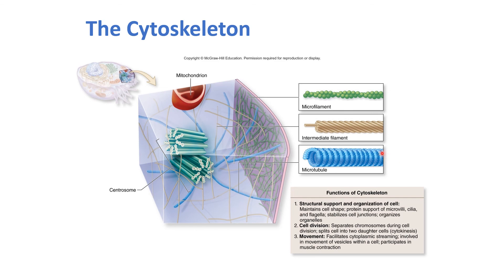Microtubules also form cilia, which help propel particles, and flagella, which help with movement. Microtubules also form microvilli, which increase the surface area of a cell so it can absorb more particles. For example, microvilli line the small intestine to help absorb nutrients, and cilia line the respiratory tract to sweep away dust particles before they reach the lungs.